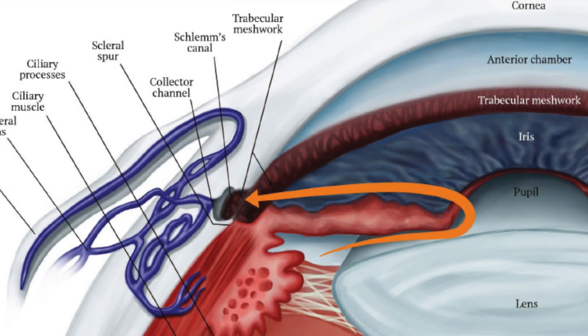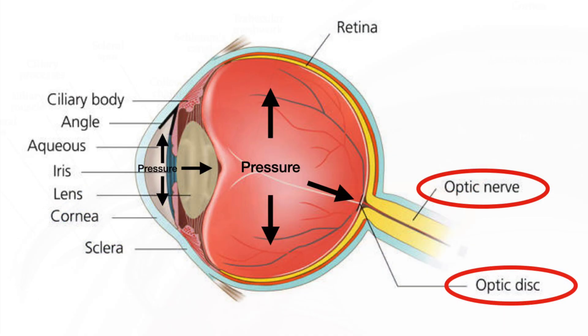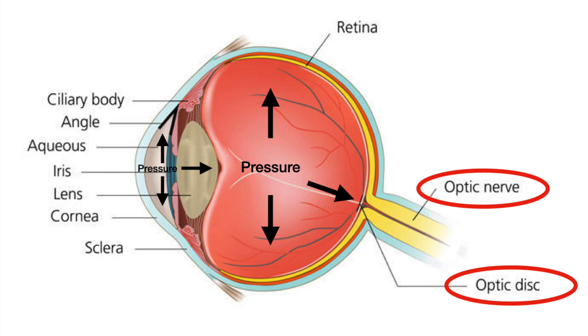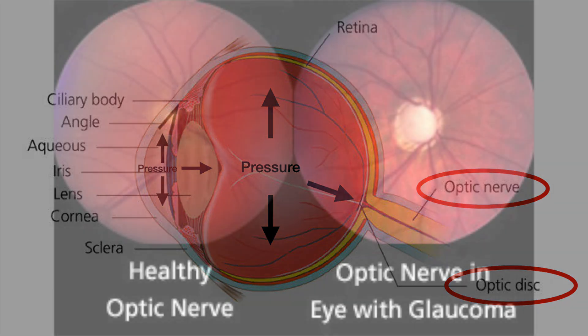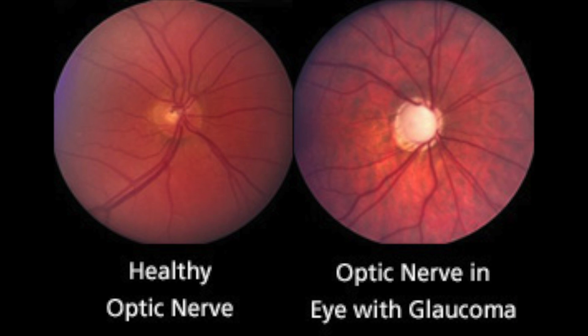It is these structures — the trabecular meshwork, Schlemm's canal, and the collector channels — that control the pressure inside of our eyes. If these things are not functioning properly, then consequently the pressure inside of our eyes rises and it squeezes the optic nerve to death, either slowly if the pressure is only mild or moderately high, or quickly if it is very high.